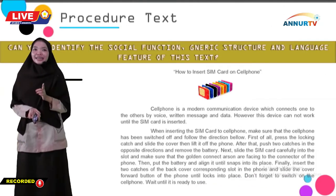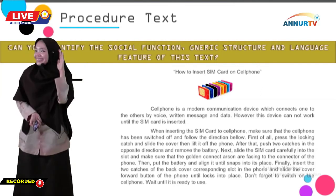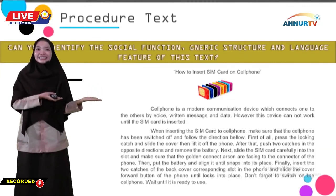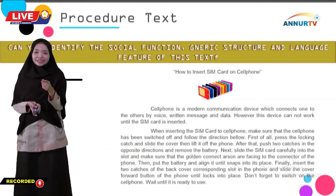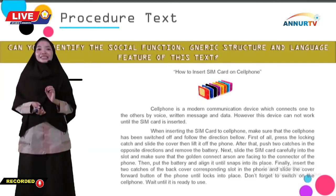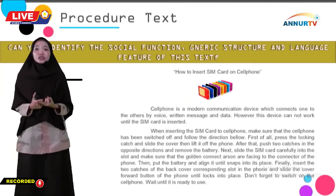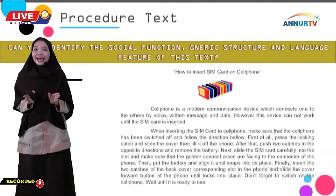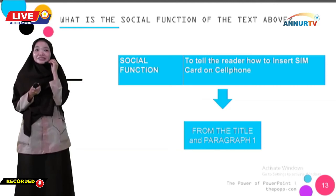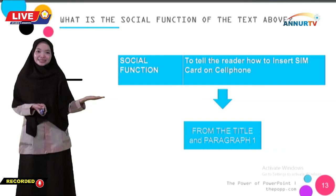In this slide, there is an example of a procedure text. Can you guess — is it manual or recipe? Yes, you are right. This is a manual. The function is to tell the reader how to do something. From this text, can you identify the social function, generic structure, and also the language features? The social function of the text is to tell the reader how to insert a SIM card into a cell phone. We can identify this from the title and paragraph 1.